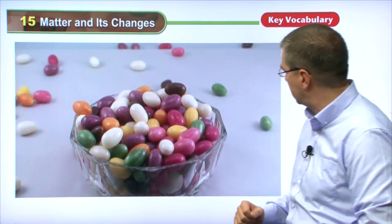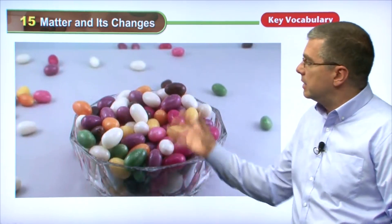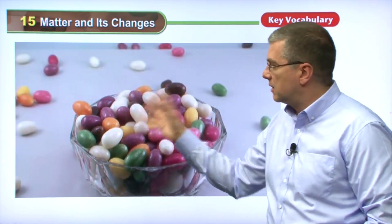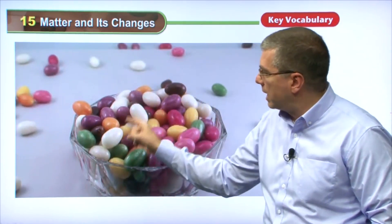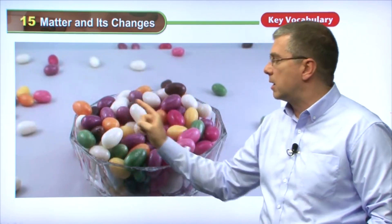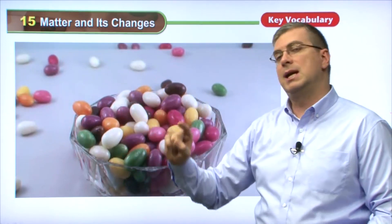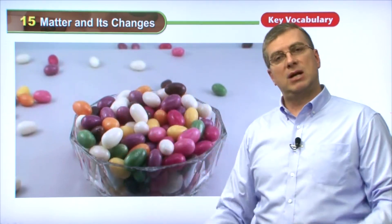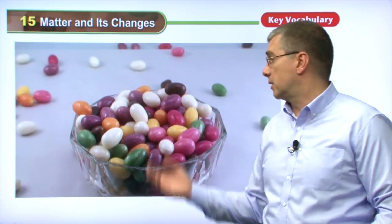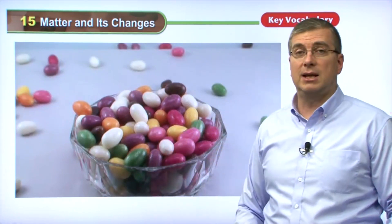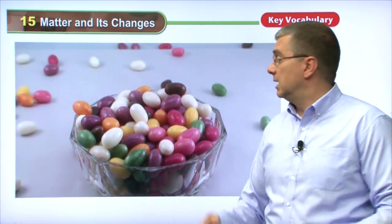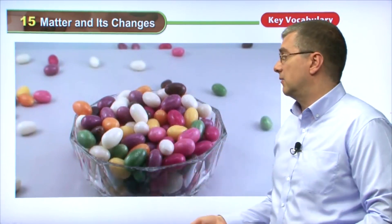It looks like jelly beans. So this is a mixture of candy — different colors. We have white, we have purple, we have orange, we have yellow, we have green. It's a mixture of different colors. It's all the same type of candy, but it's a mixture of colors. It's more attractive this way.